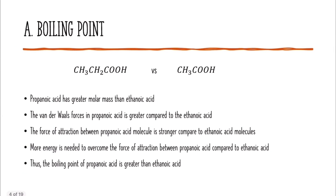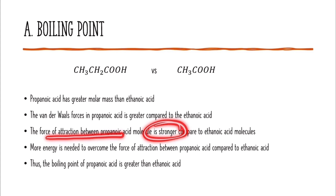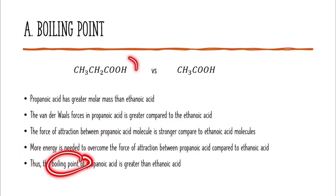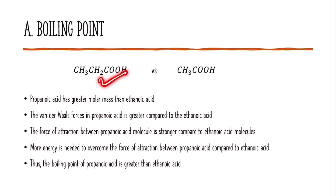Next, let's look at the second example: propanoic acid versus ethanoic acid. Propanoic acid has a greater molar mass than ethanoic acid, so the van der Waals forces in propanoic acid are also greater. The force of attraction between propanoic acid molecules is stronger, so more energy is needed to overcome it. Therefore, the boiling point of propanoic acid is greater than ethanoic acid. In general, when the size of the alkyl group is larger, the boiling point will be higher.